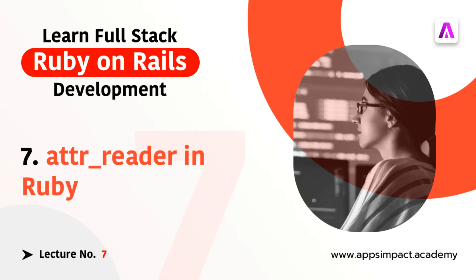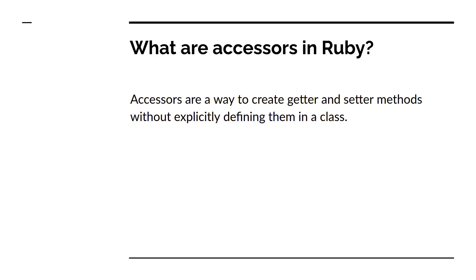Hey guys, welcome back. This is the seventh video of our full stack Ruby on Rails development bootcamp series. We're going to discuss accessor methods in Ruby. Accessors are a way to create getter and setter methods without explicitly defining them in a class.